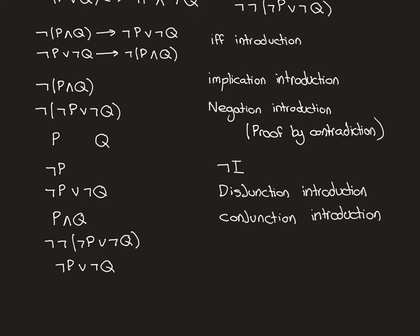So we now want to show the other direction: 'not P or not Q' implies 'not (P and Q)'. Again, to show this implication proposition, we're going to use implication introduction. Implication introduction says that to have this implication, you must show that if you take the antecedent as a premise, you can arrive at the consequent. So we need to somehow break down the disjunction 'not P or not Q'.